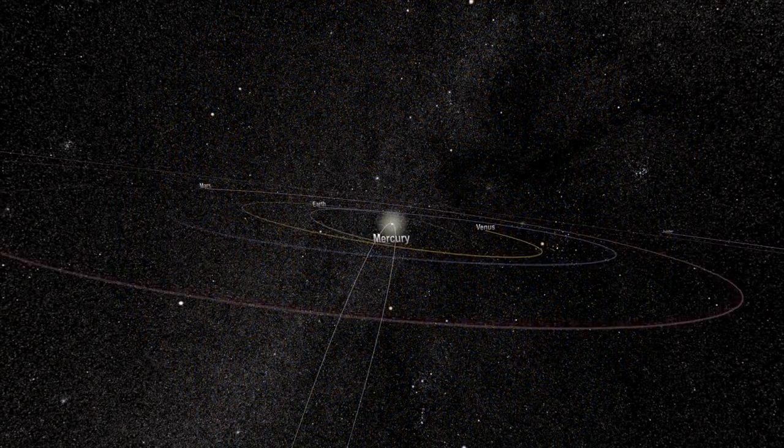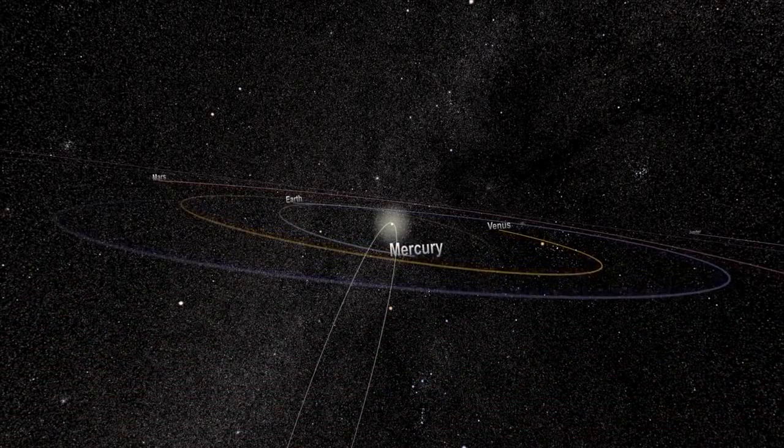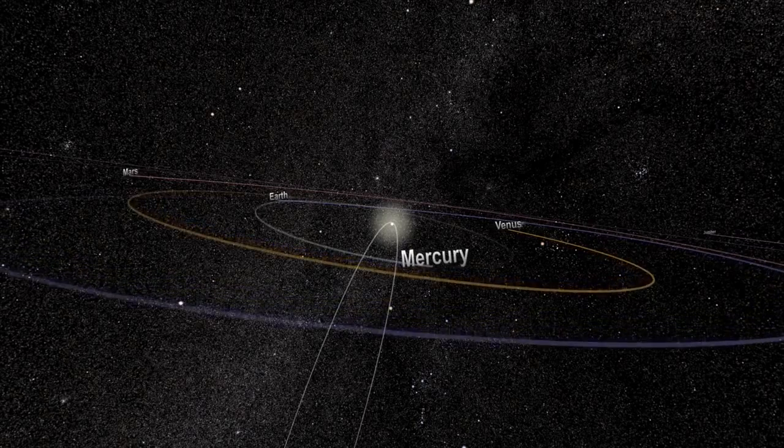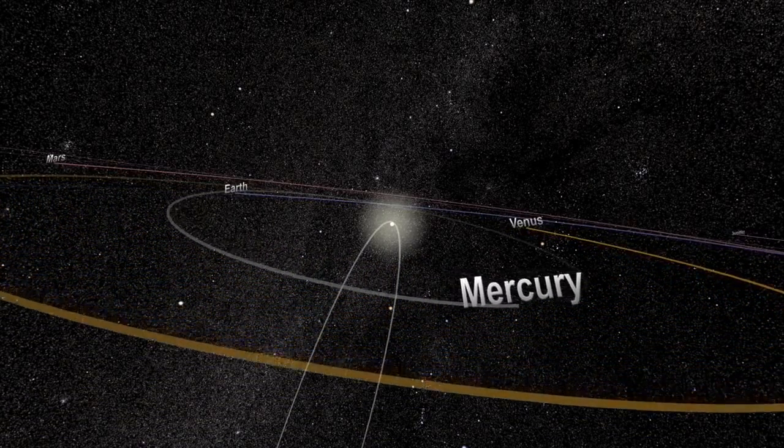Many sungrazing comets follow a similar orbit, called the Kreutz path, and collectively belong to a population known as the Kreutz group. In fact, close to 85% of the sungrazers seen by the SOHO satellite are on this orbital highway.